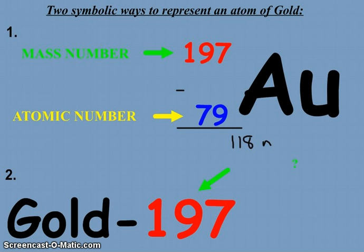The second symbol, you see there, gold-197, that's used more often in a text format, like in a paragraph situation. The first symbol we'll use much more often later in the year for nuclear equations. But when it's written out, gold-197, the 197 again is the mass number.